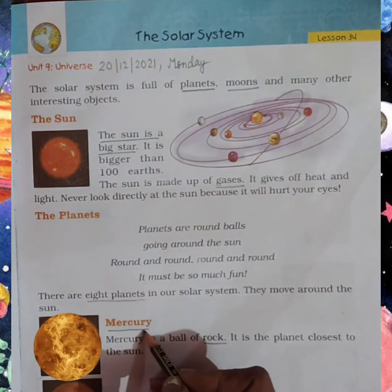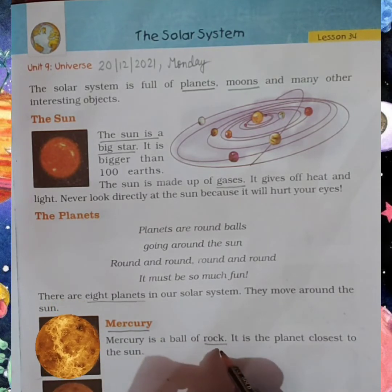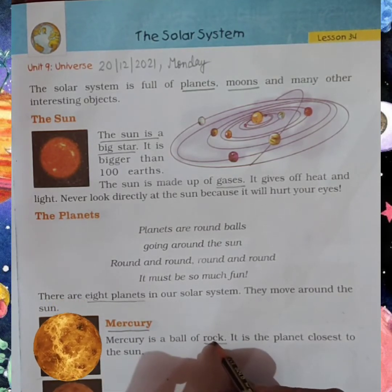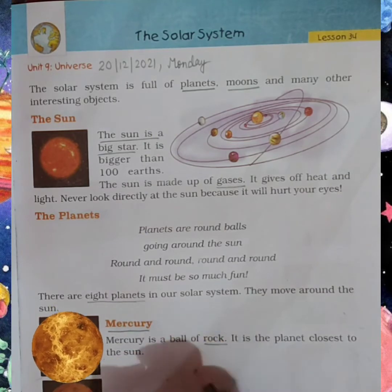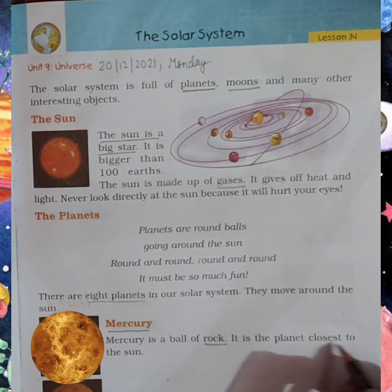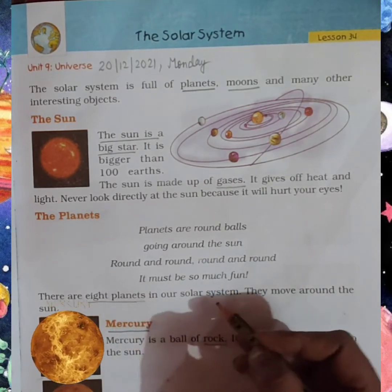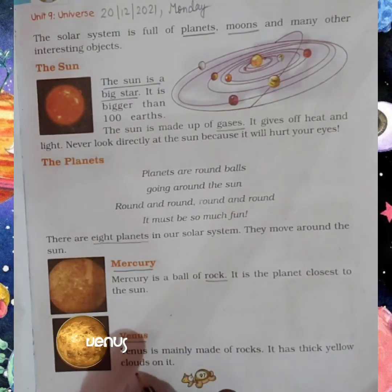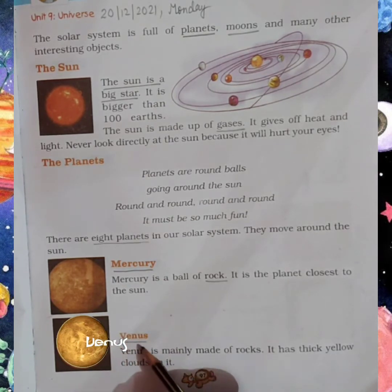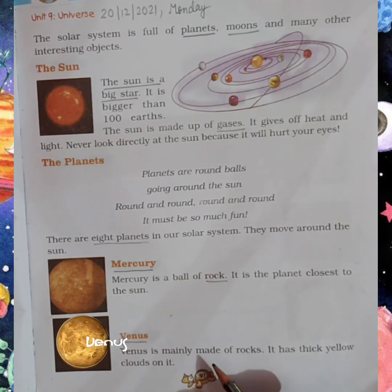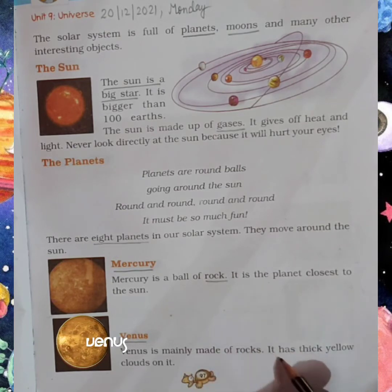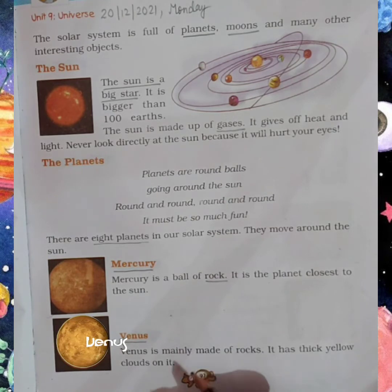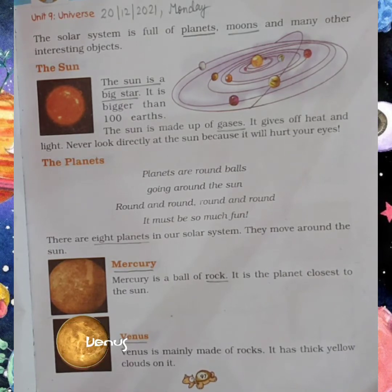The first planet is Mercury. Mercury is a ball of rocks — rock means chattan. It is the planet closest to the sun. It has thick yellow clouds on it. As you can see in this picture.